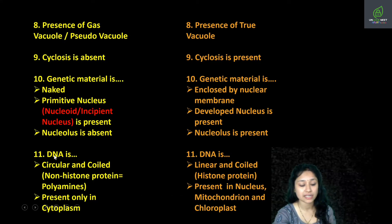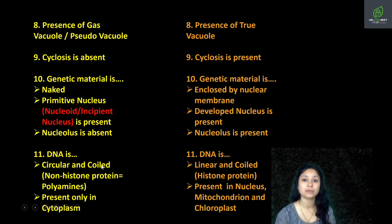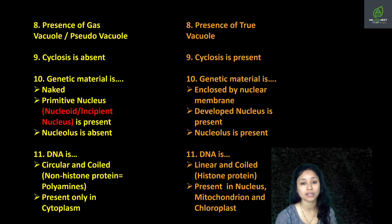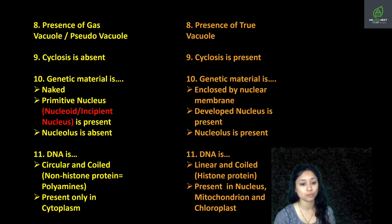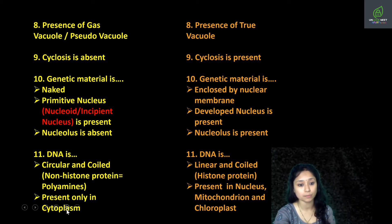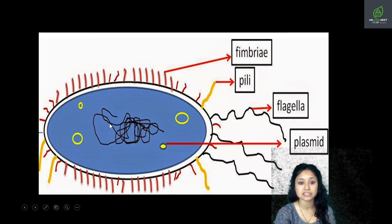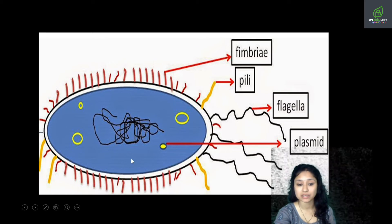Now talking about DNA: in prokaryotic cells, the double-stranded DNA is circular and coiled. The coiling is done with the help of non-histone proteins called polyamines. This DNA is present only in the cytoplasm. As shown in the diagram, the DNA is circular, coiled, and present only in the cytoplasm.